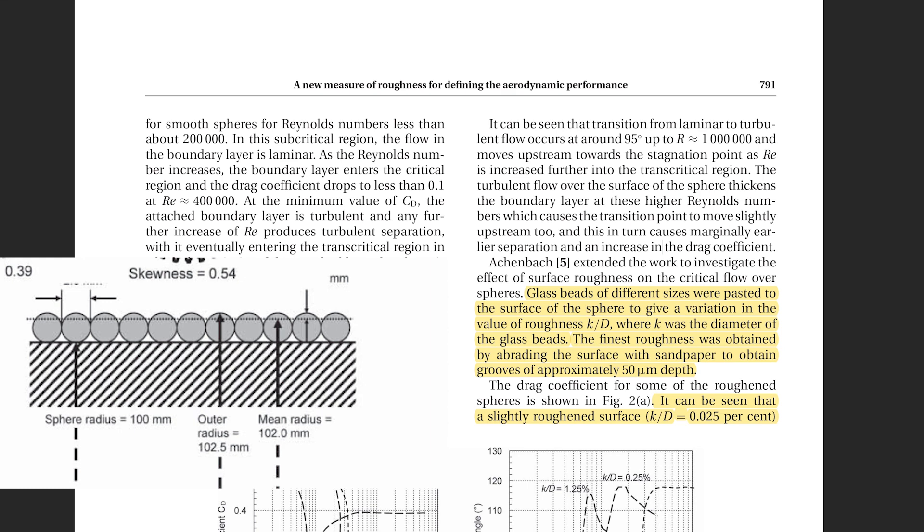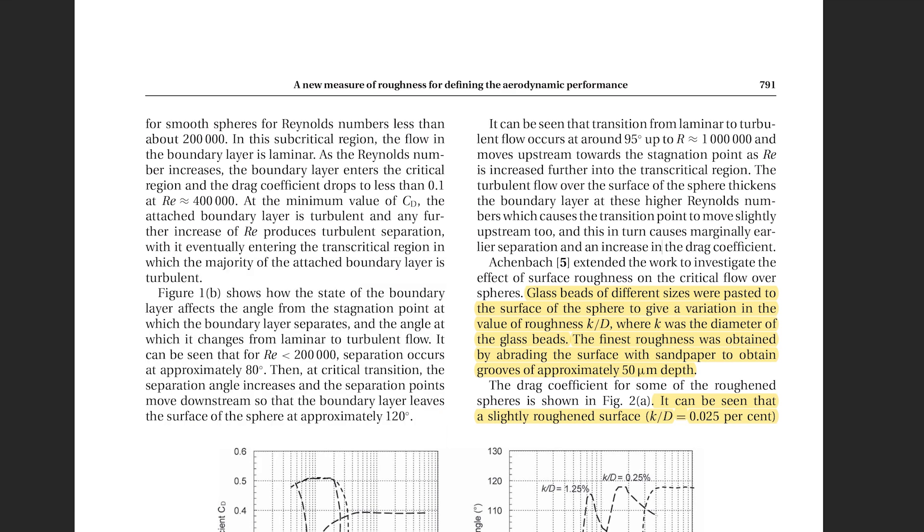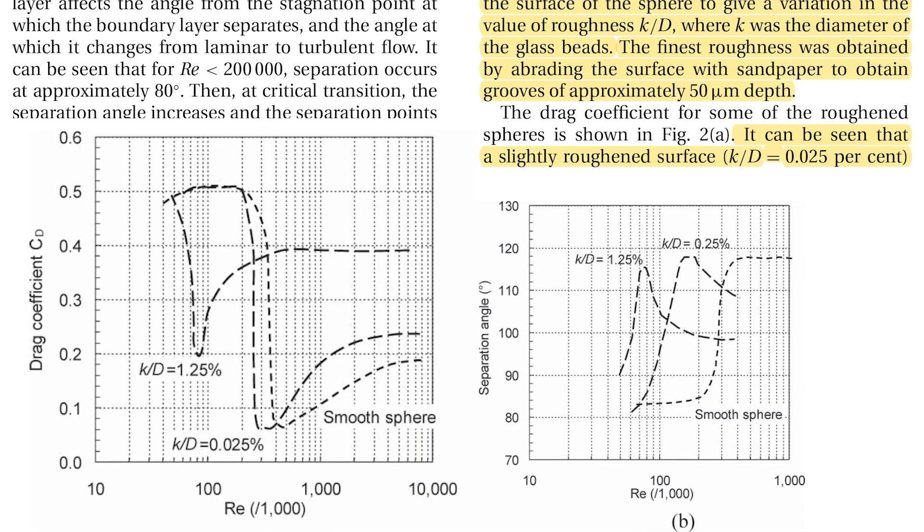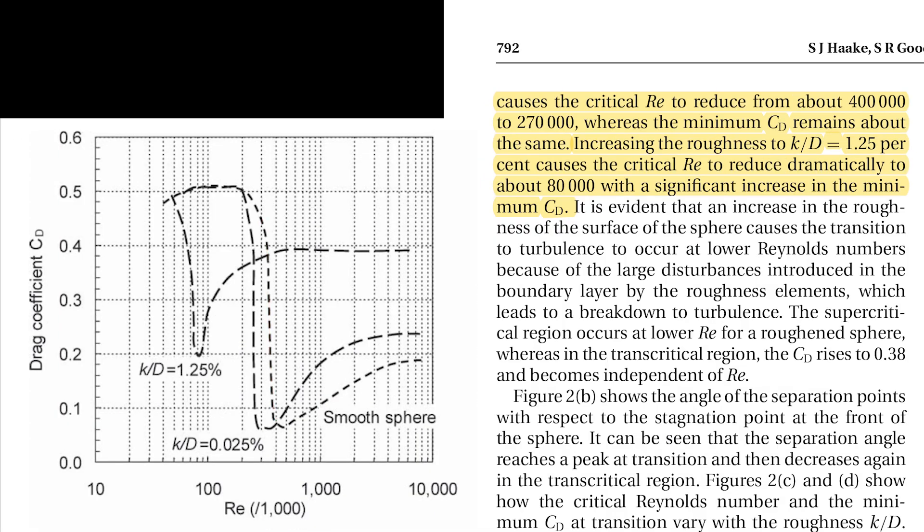The finest roughness was obtained by abrading the surface with sandpaper to obtain grooves of approximately 50 micrometers depth. It can be seen that the slightly roughened surface causes the critical Reynolds to reduce from about 400,000 to 270,000, whereas the minimum drag coefficient remains about the same.